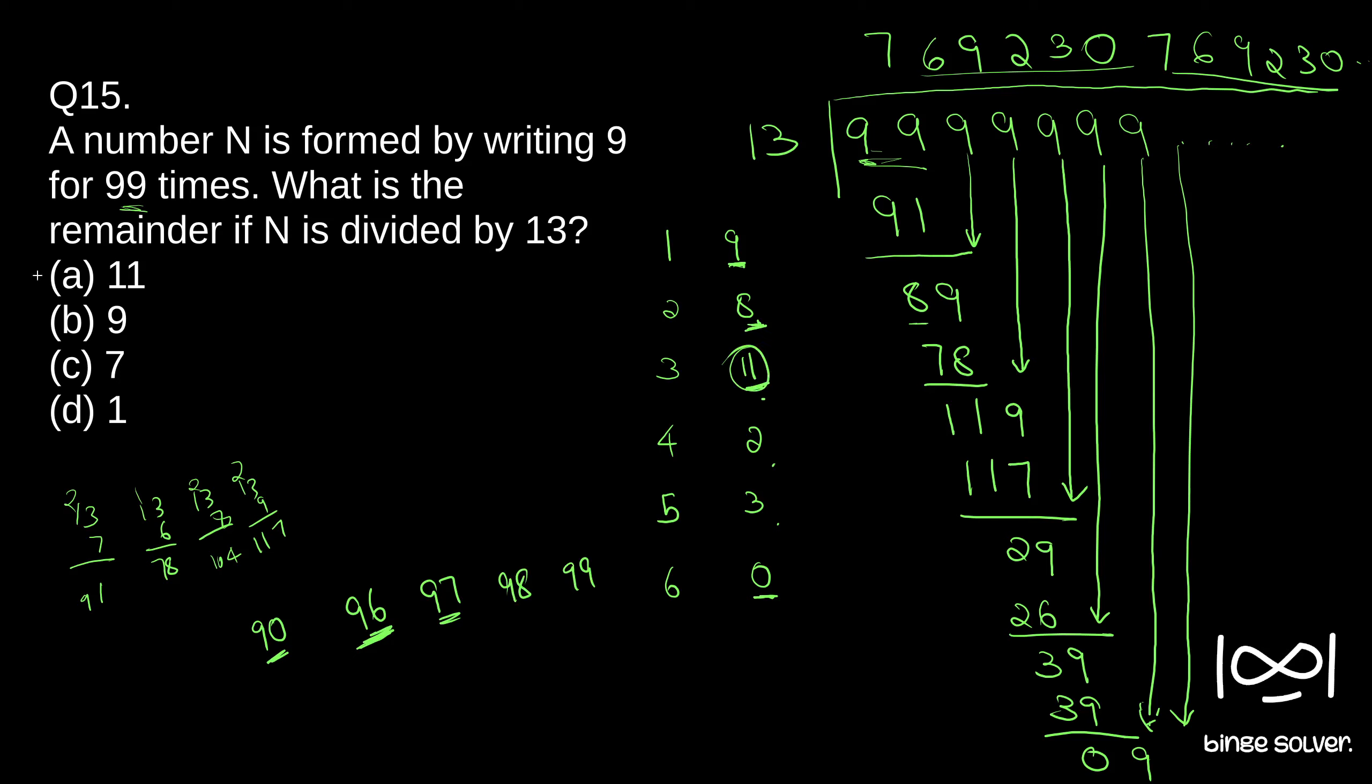So 11 is the answer. Our solution to question 15 is A, 11. This is the pattern here, the remainders repeat. We just have to figure out what is the remainder at 99 when 9 repeats for 99 times. The solution here is 11.